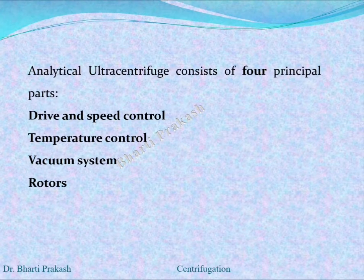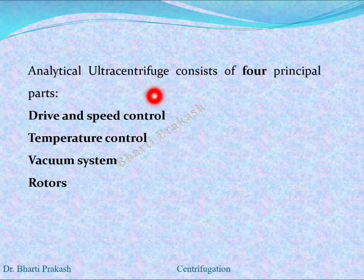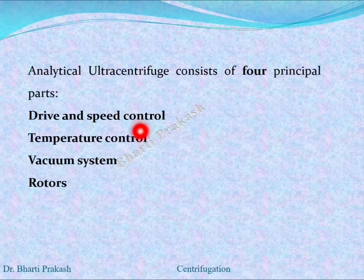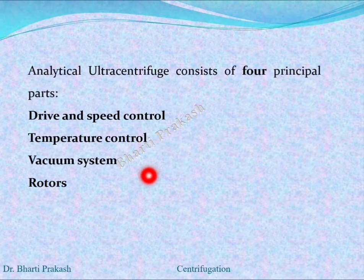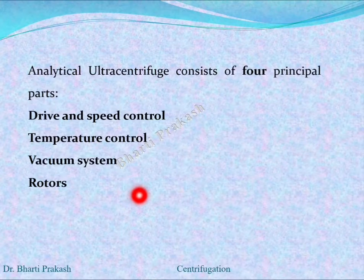The analytical ultracentrifuge consists of four principal parts: it has the drive and the speed control, it has temperature control, it has a vacuum system, and it consists of the rotors.